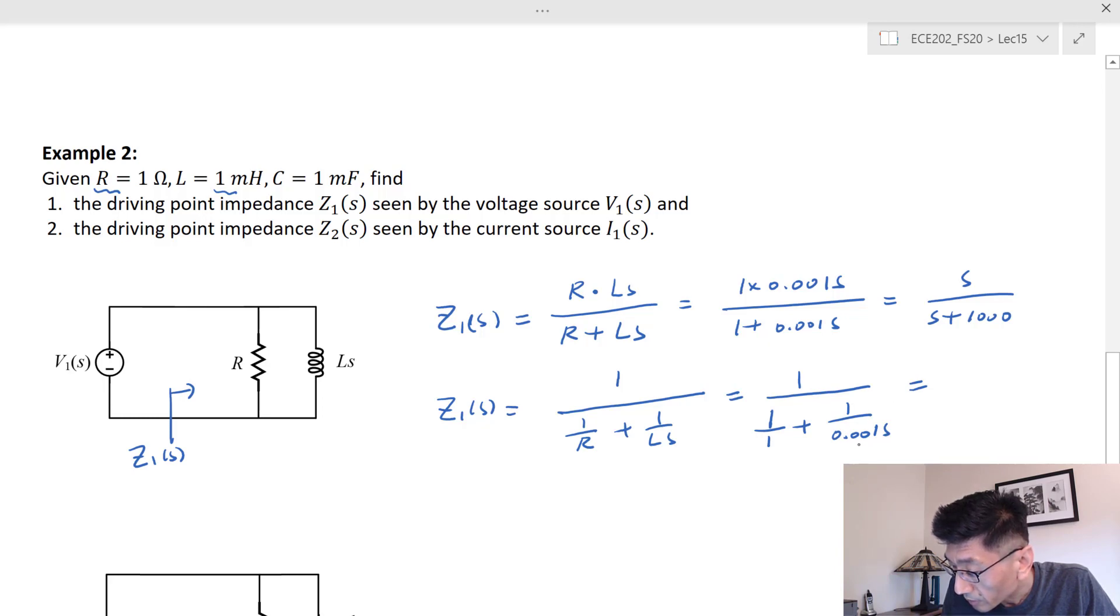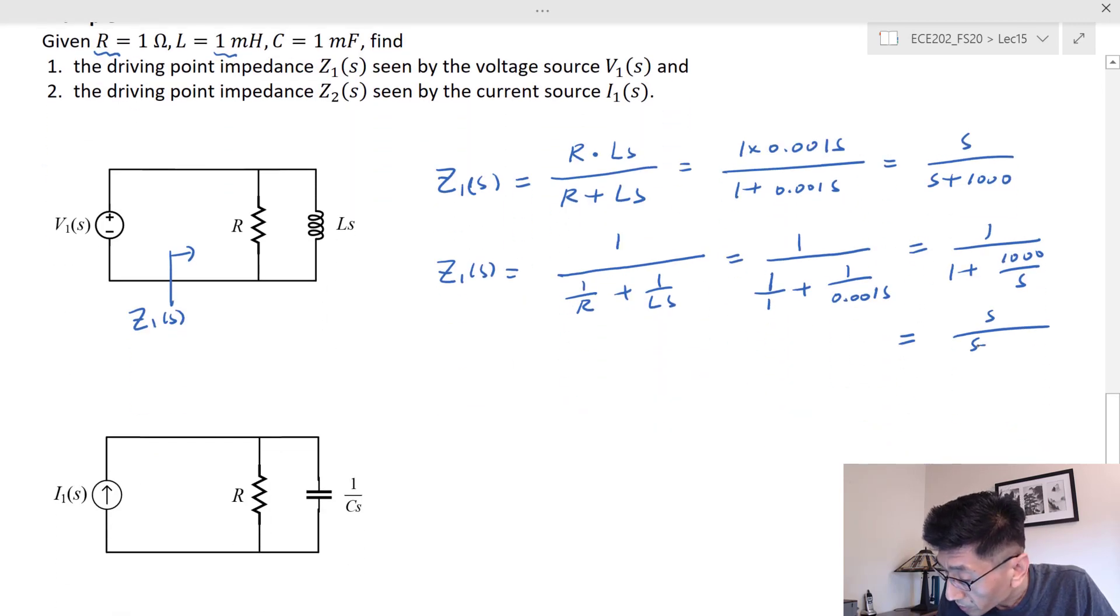This is equal to 1 over 1 plus 1 divided by s. I multiply s on the numerator and denominator, and I get the same answer, so that's equal to s over s plus one thousand.